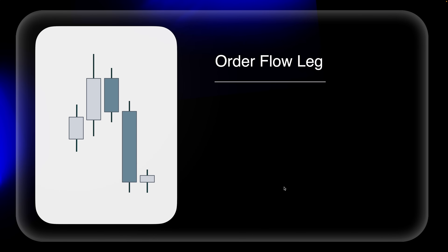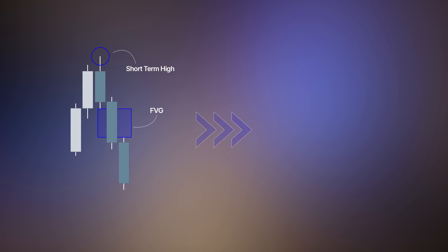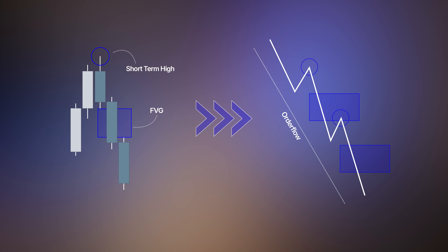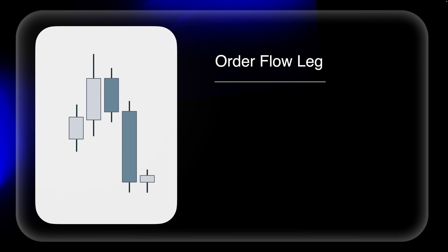Now we dive into order flow. Those short-term highs and short-term lows — where a swing high needs to be followed by a fair value gap — that is market structure, yes. But if we dissect it more accurately: market structure is the bird's-eye view, while order flow is the more accurate representation of what is happening at this moment in time. That short-term high followed by a fair value gap is an order flow lag.